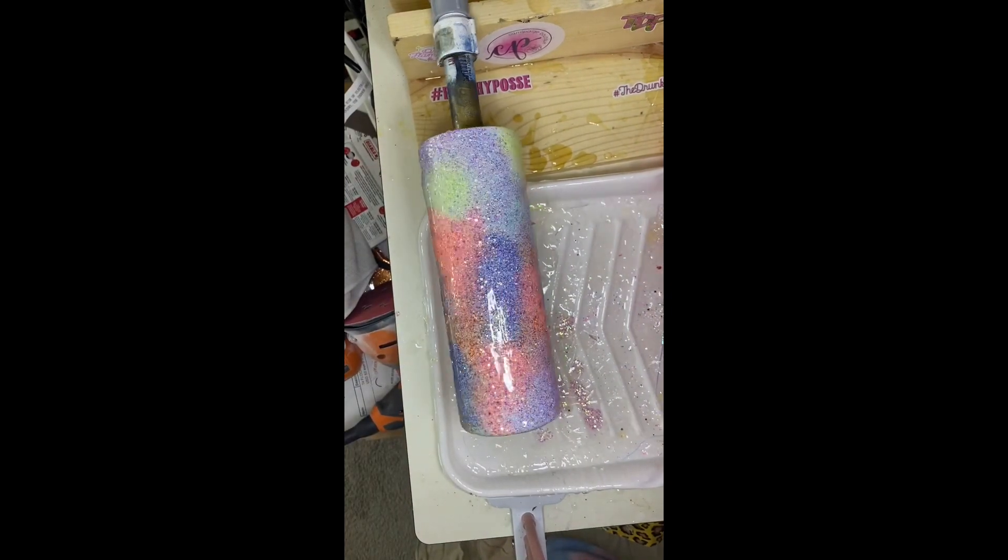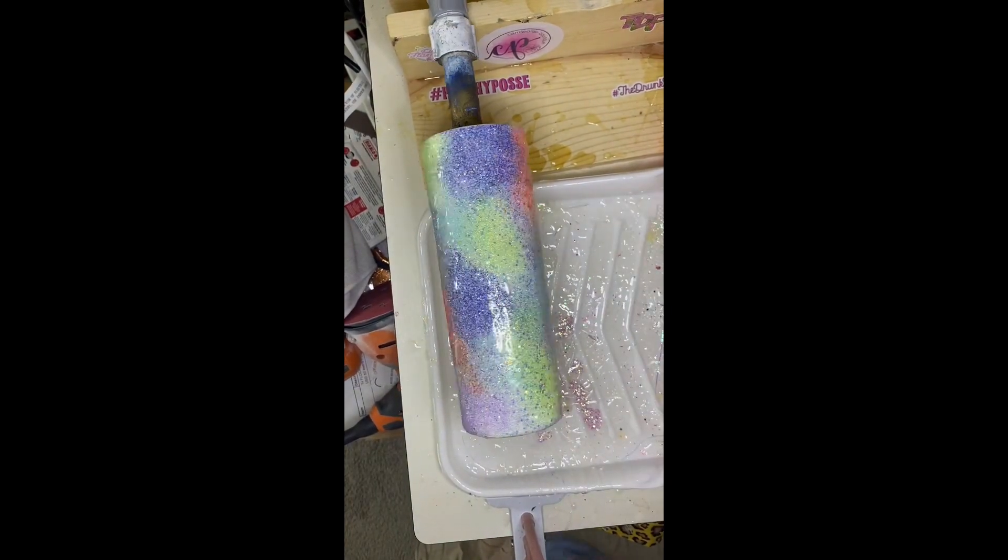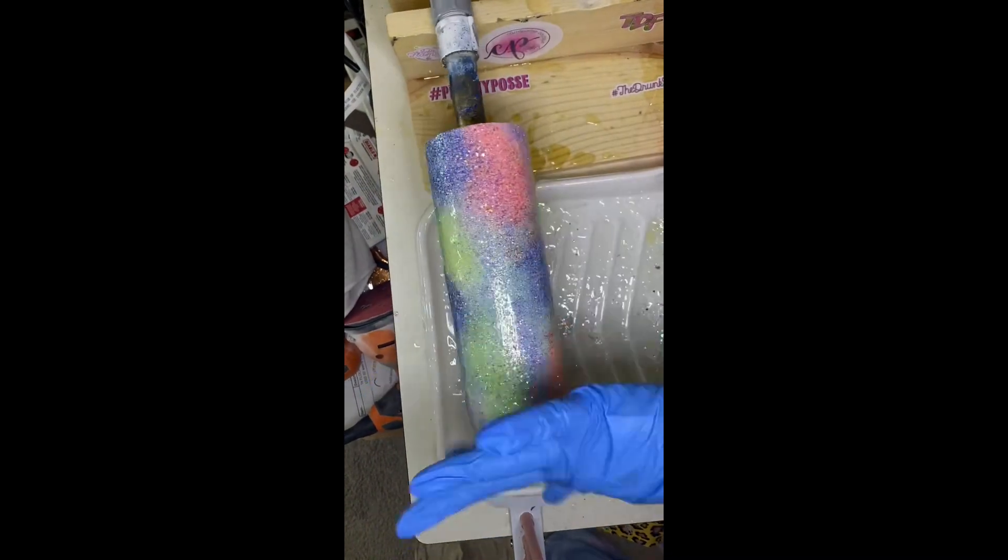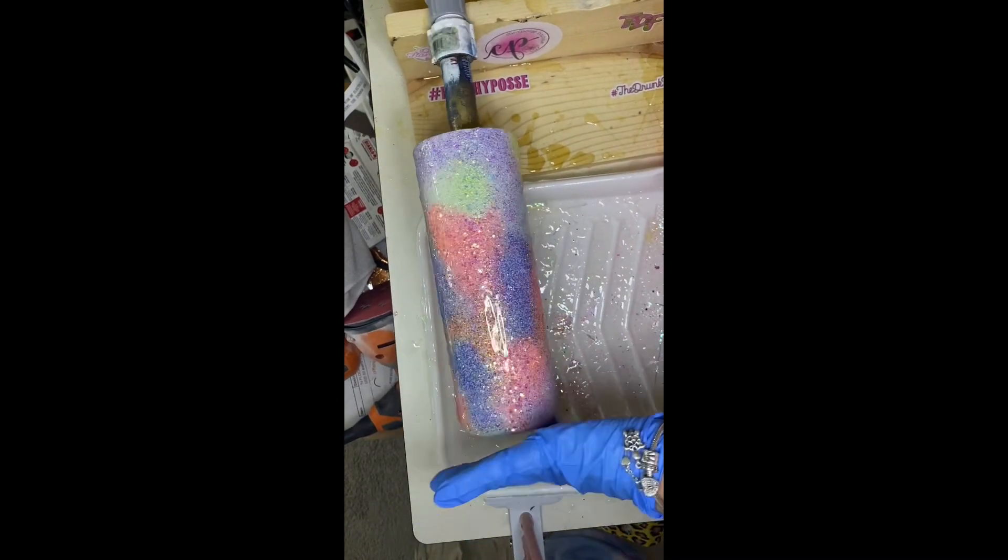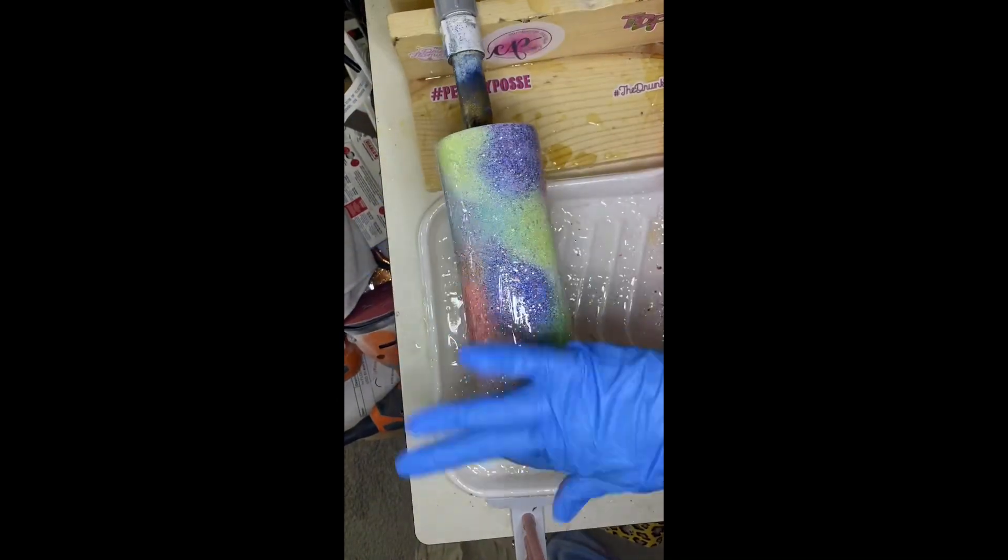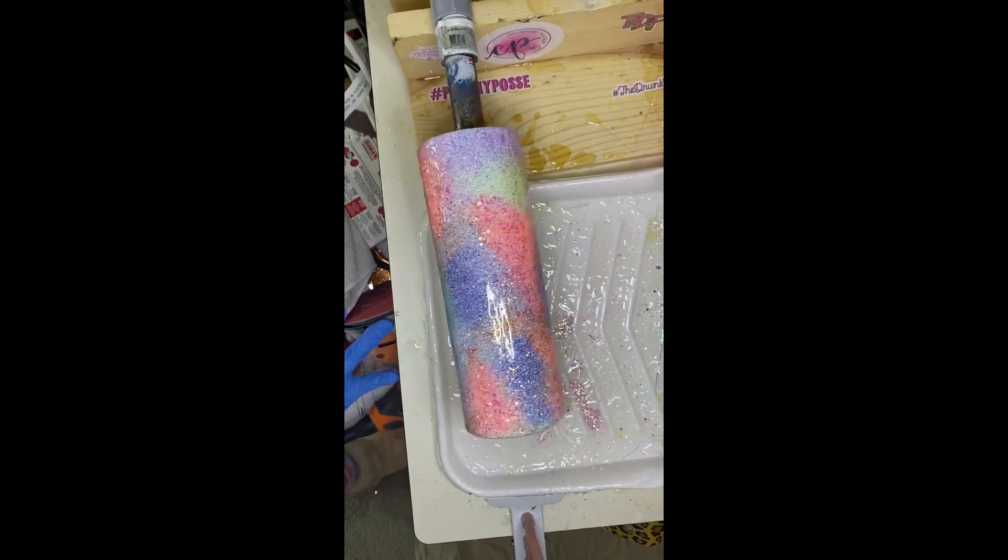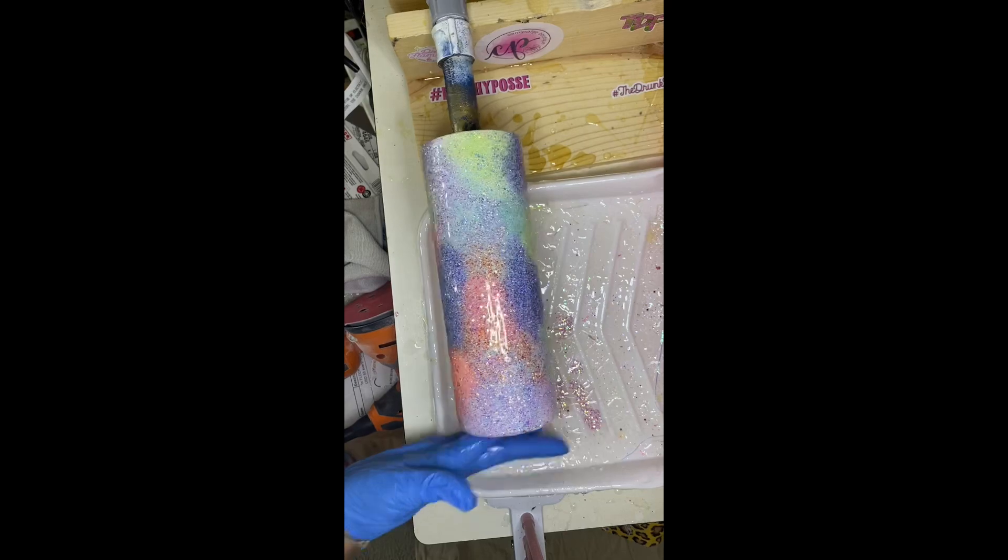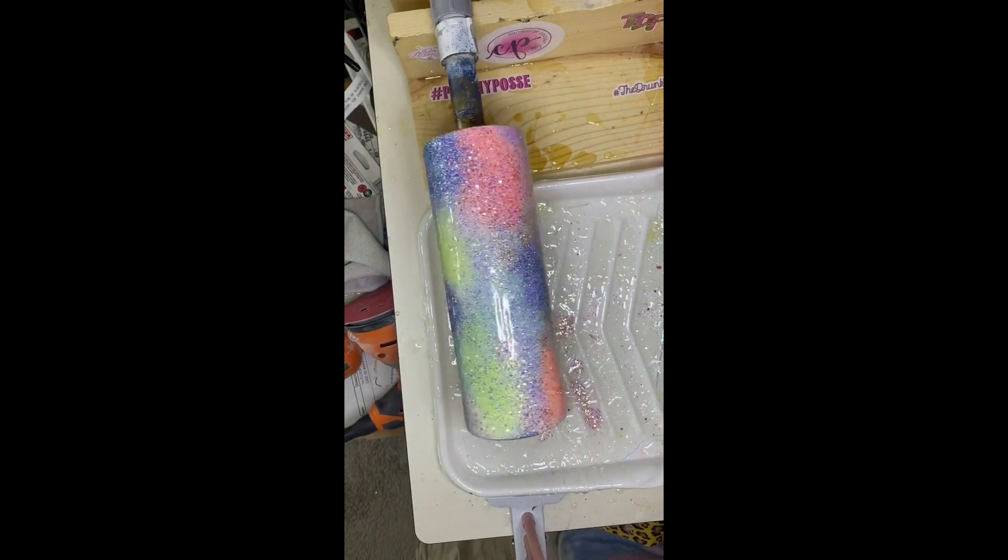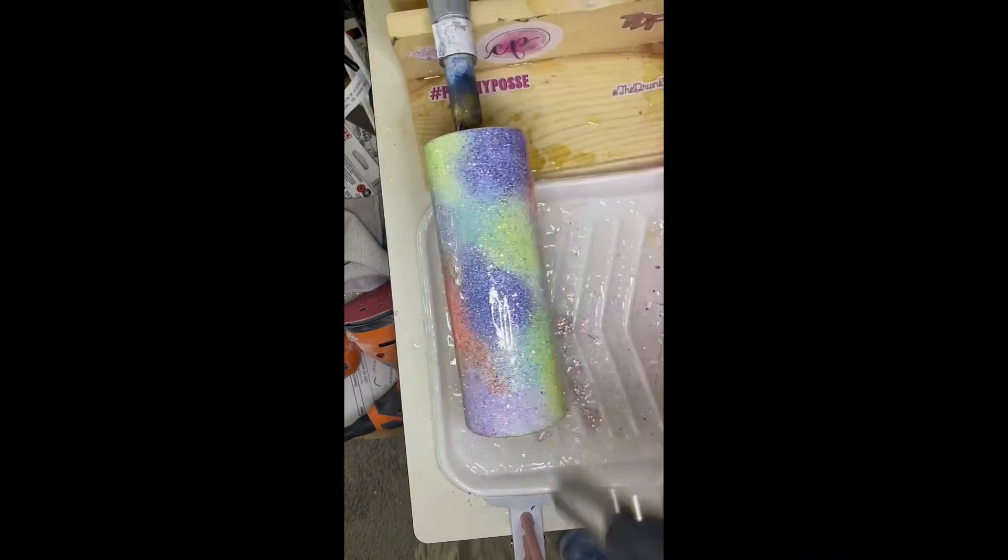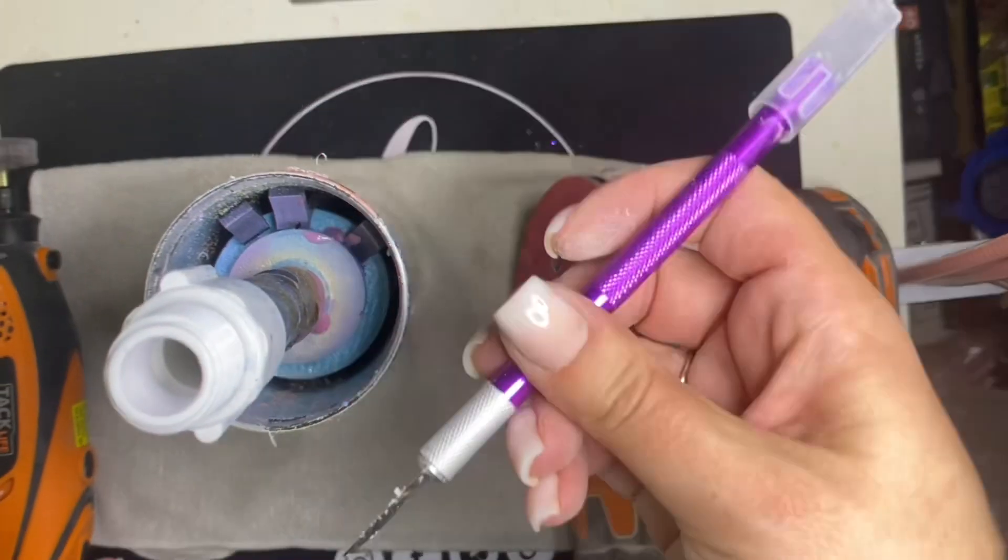Once I have my tumbler completely coated, I am going to go in with my torch. I got it from Amazon and I am going to pop any micro bubbles that we may have. This way we've got a beautiful glass like finish on our tumbler and we are going to let that cure for six to eight hours. Drying times may vary depending upon the epoxy that you are using.